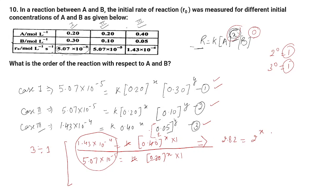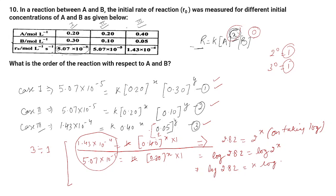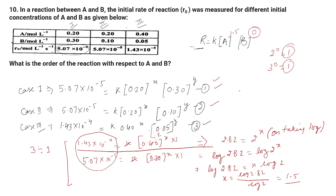Taking log on both sides: log(2.82) = x × log(2). Therefore x = log(2.82) / log(2), which gives x ≈ 1.5.